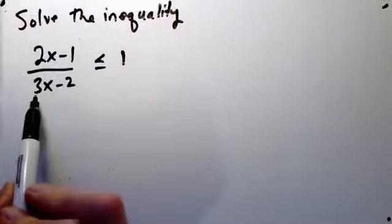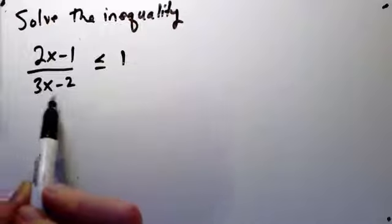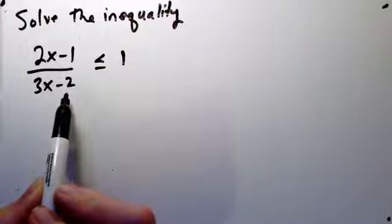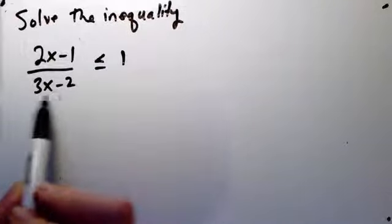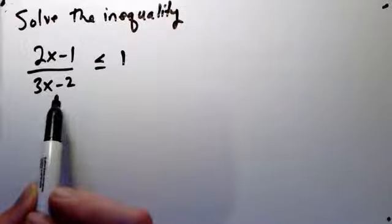Now a tempting thing might be to multiply both sides of the equation by 3x minus 2. Multiplying by anything whose sign you're unsure of, the sign of 3x minus 2 depends on the value of x.